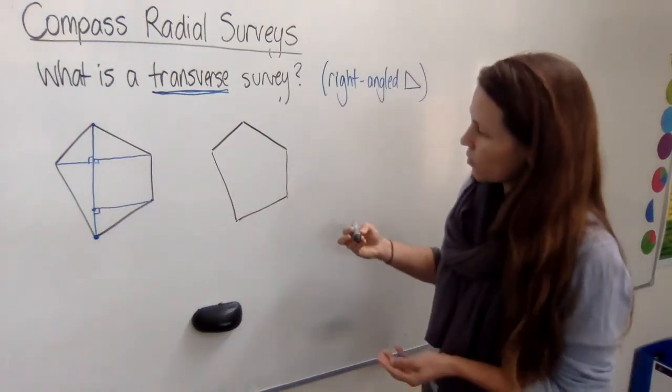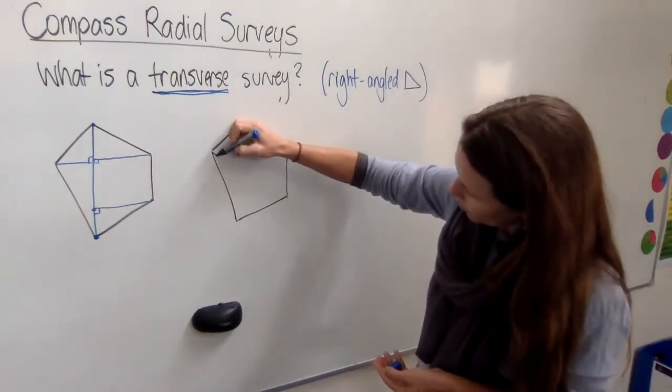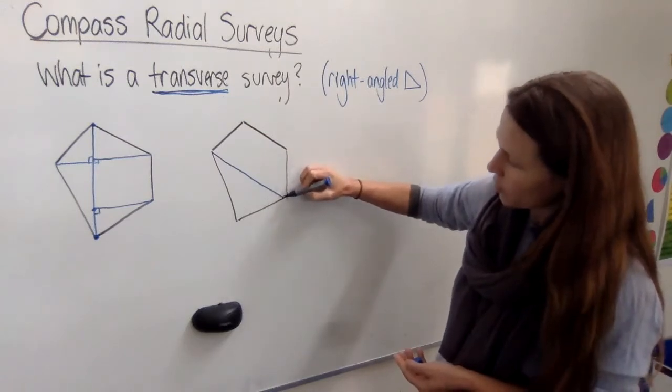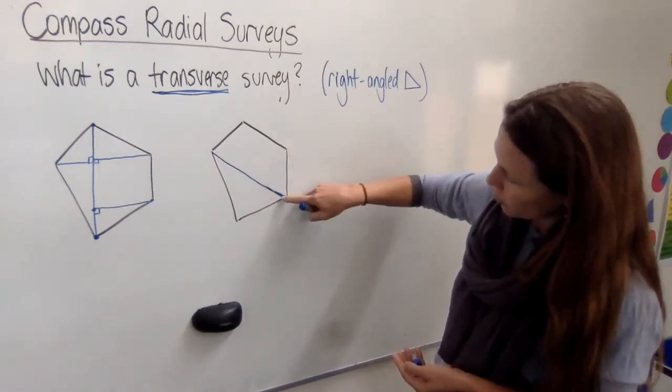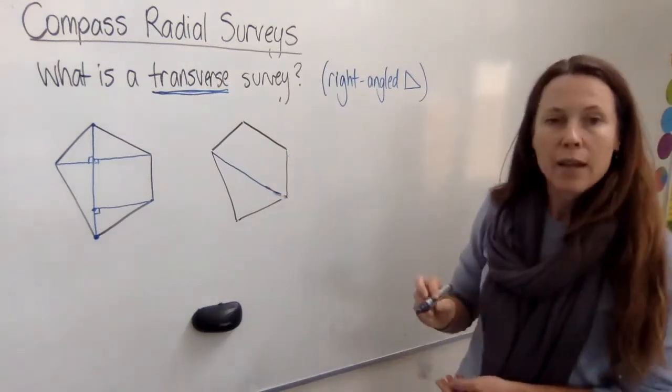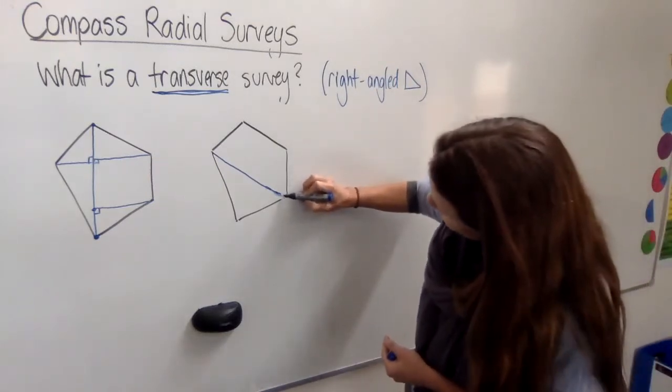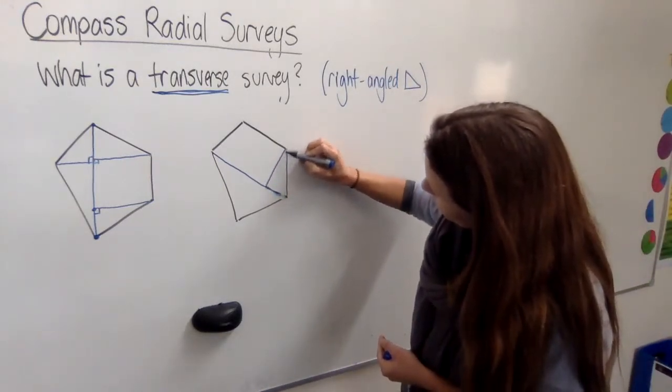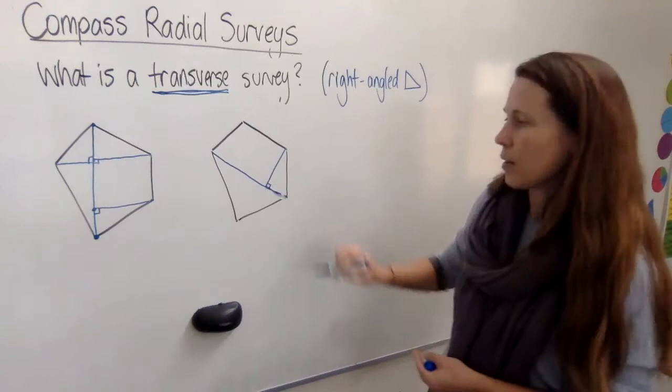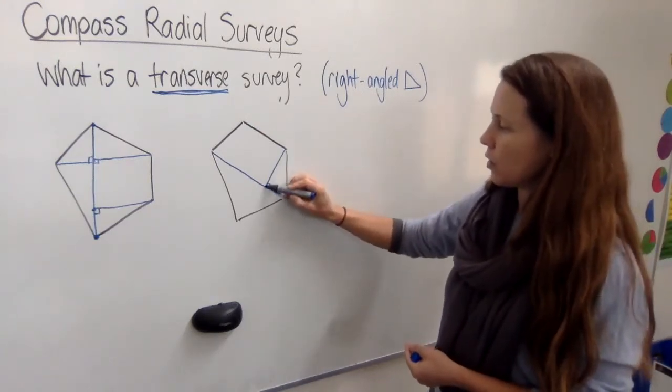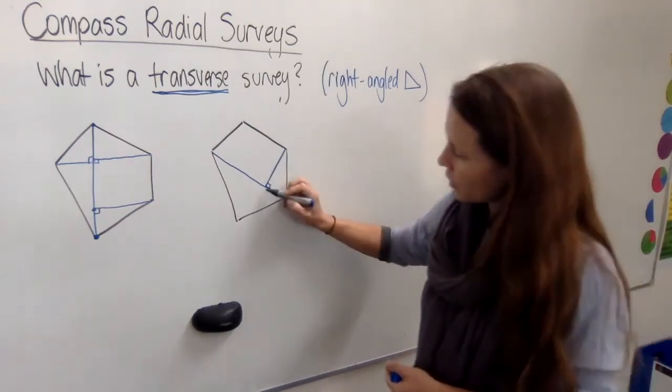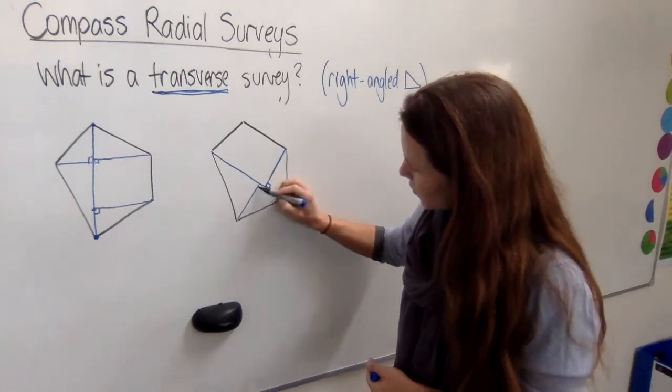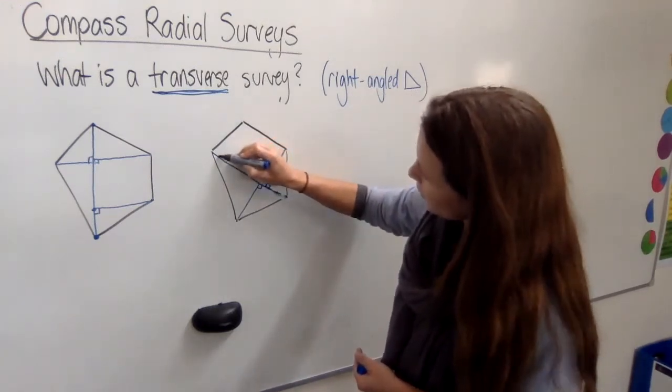Now how else could you do it? Well let's imagine that we were going across this way with our transverse lines. As we walk across this way, as soon as you get to a point where you have a right angled line that can come straight up to a point, you go ahead and draw it in, so these will all be right angles coming along this way.